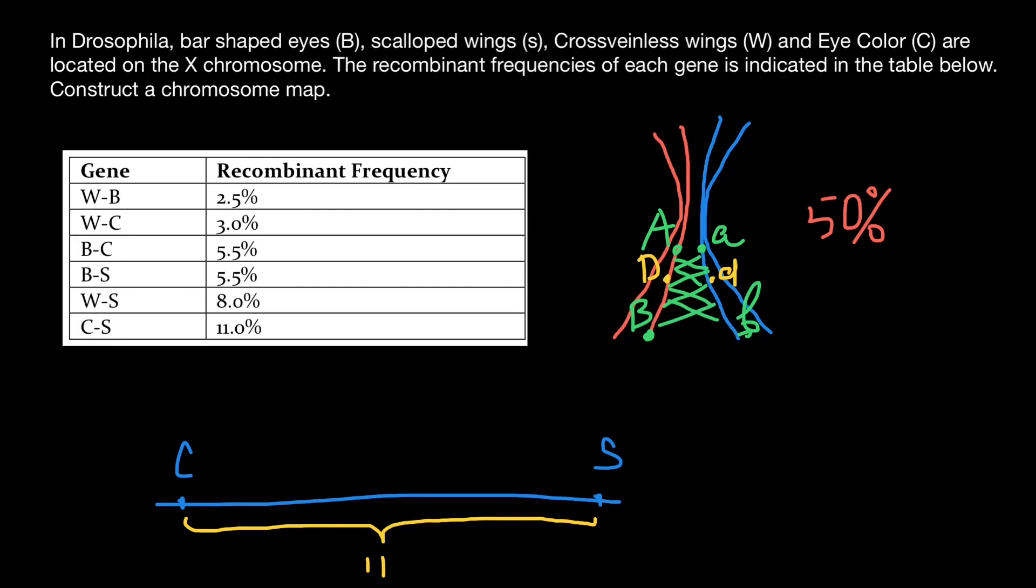And we have 11% frequency of the crossing over between them. So this equal to 11 centimorgans. This is relative measurements. And if gene C and S would be on the different chromosome, the distance between them would be different if we will measure them in, for example, nucleotides. So this is not exact number, but just relative number.